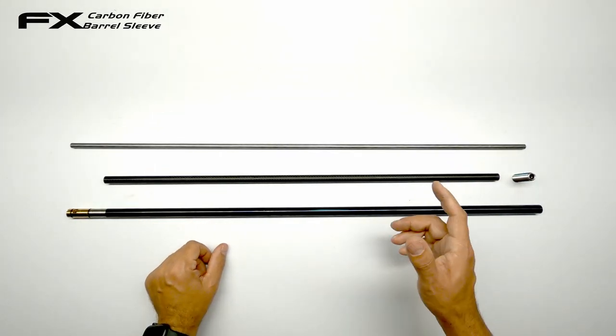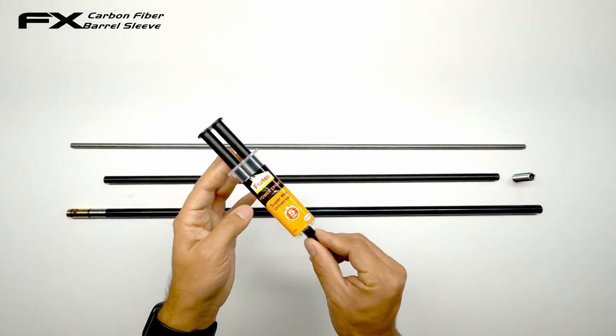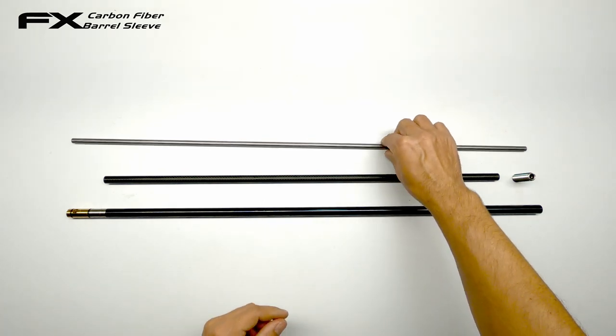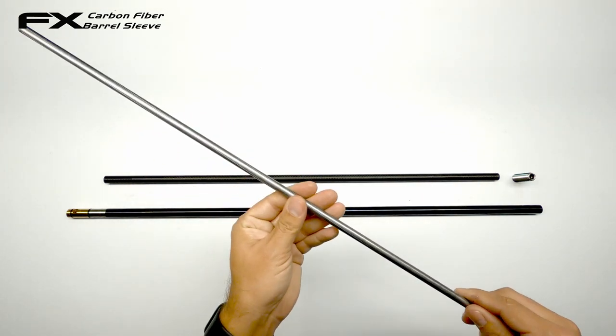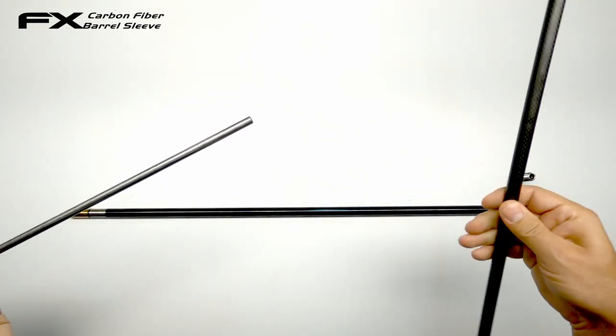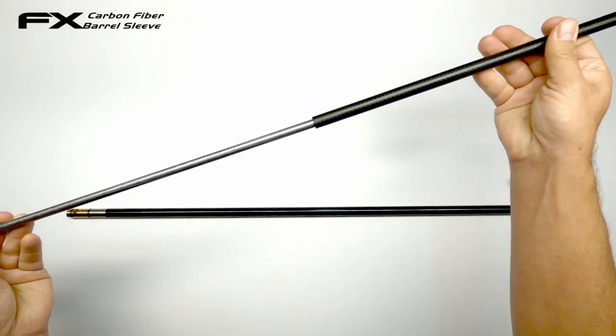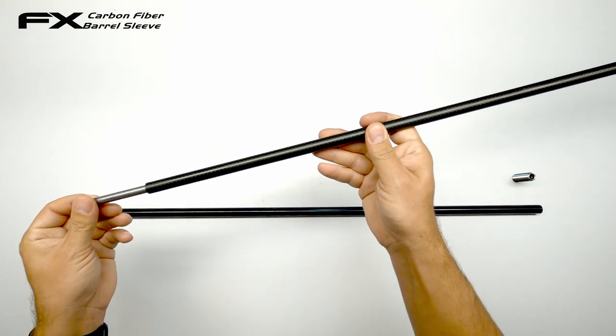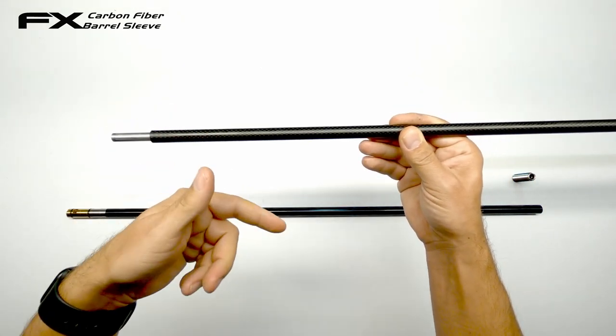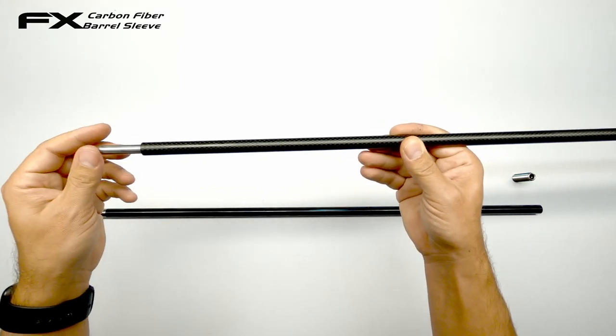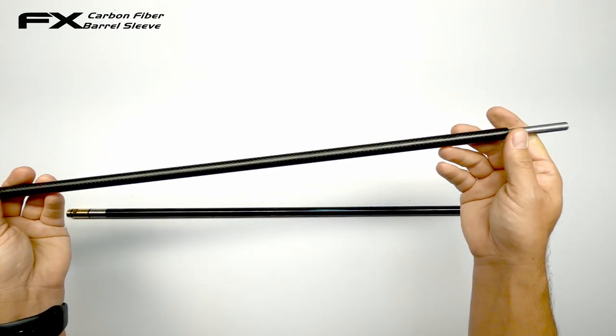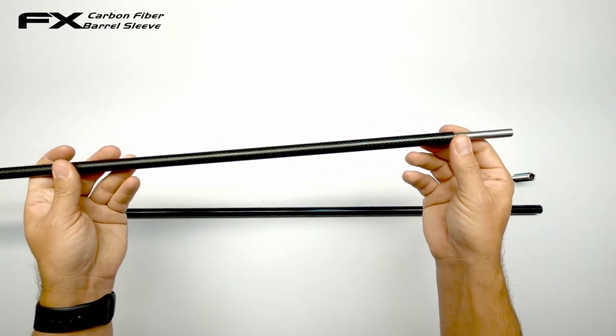Now for the other method. If you would decide to go ahead and glue it, you can use a two-part epoxy. Mix it together. Then you smear it over your liner on the outside you see here. Then you take your carbon fiber sleeve, slide it over. Then I would rotate it a bit inside so the epoxy gets a nice even coating on the inside of the carbon fiber sleeve.